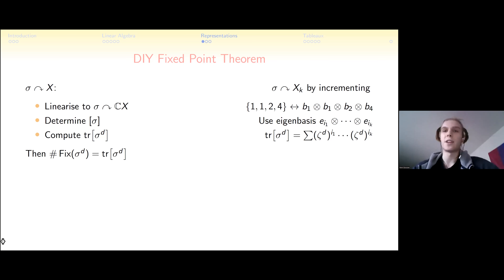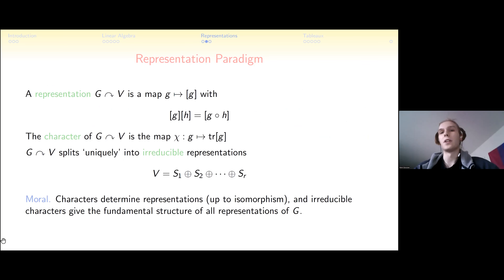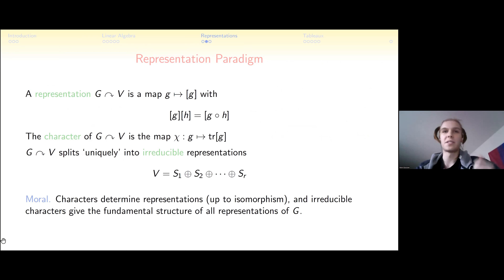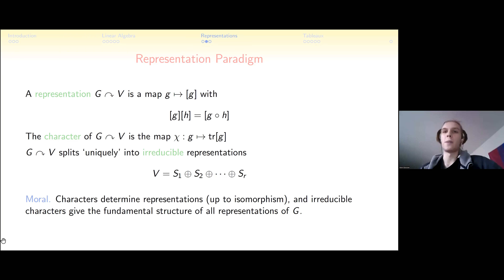Now let's discuss how this fits into the general theory of representation theory. A finite group G is a collection of actions closed under composition, with identities and inverses. A representation assigns to every element of G an action on a vector space V, satisfying the composition law: the product of two group elements corresponds to the composition of the two linear operations. We can write every linear transformation as a matrix.